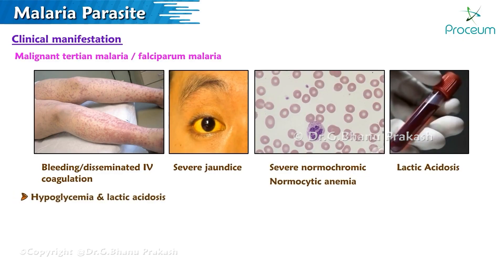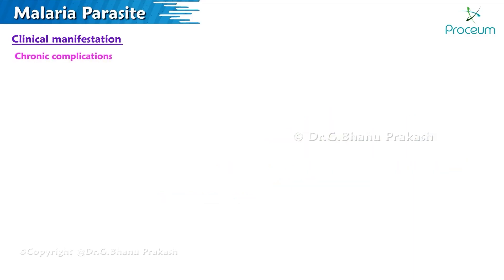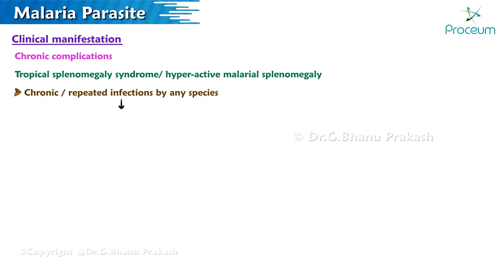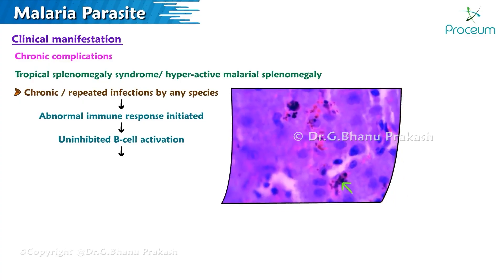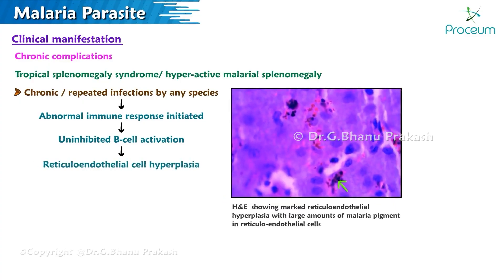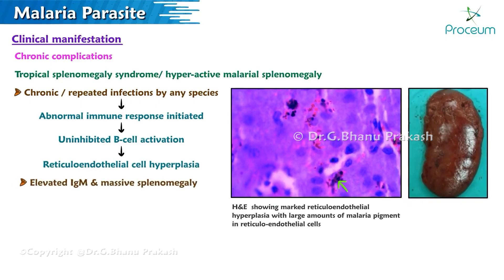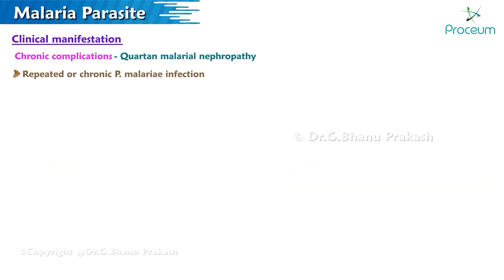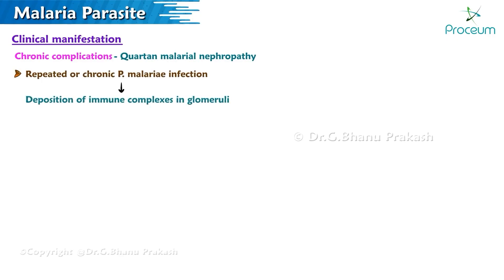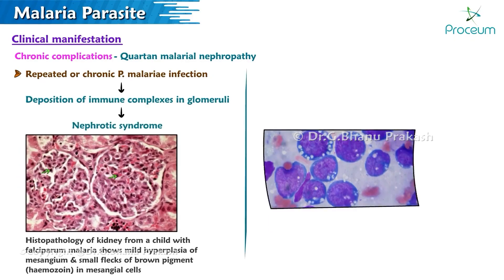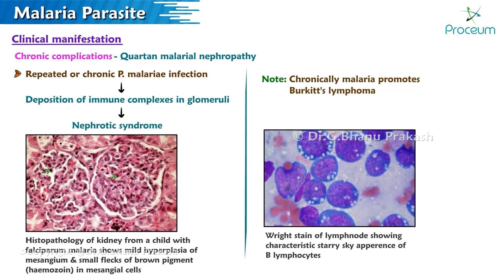Hypoglycemia and lactic acidosis are poor prognostic factors. Chronic complications include tropical splenomegaly syndrome — also called hyperactive malarial splenomegaly — in which chronic or repeated infections initiate an abnormal immune response, leading to uninhibited B-cell activation and reticuloendothelial hyperplasia, with characteristically elevated IgM and massive splenomegaly. Malarial nephropathy occurs due to repeated Plasmodium malariae infection, causing immune complex deposition in the glomeruli and nephrotic syndrome. Chronic malaria also promotes Burkitt's lymphoma.